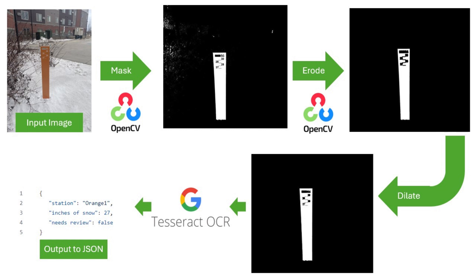This is done through masking by color. In our case, the color is the blaze orange of the newest generation of snow stakes, as seen in the top left. We tried neon green, because in the wintertime there are no green plants, but the reflection of the snow on the stake created too much of a gradient that interfered with the masking process.